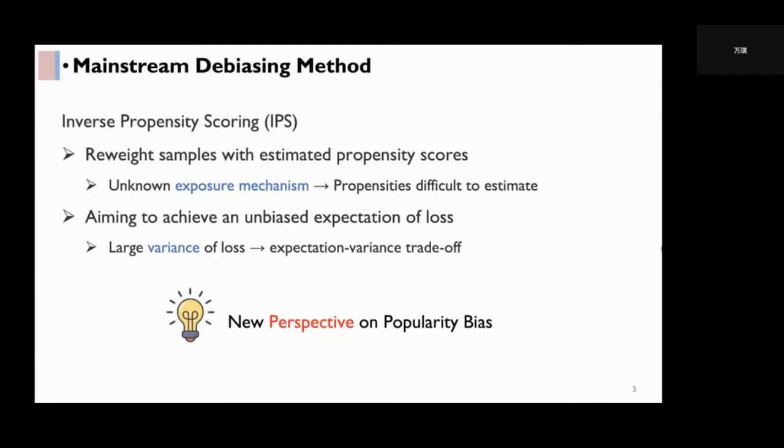but meanwhile, the variance of loss is quite large after reweighting, which hurts the model performance. Various reduction techniques have to be applied to trade-off between the unbiasedness and the variance.